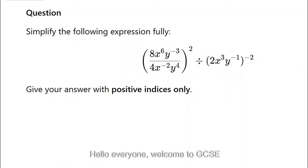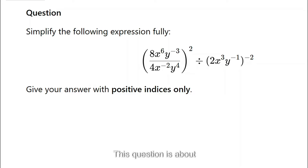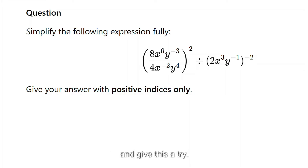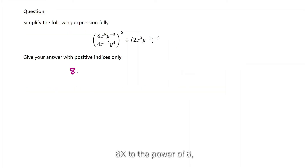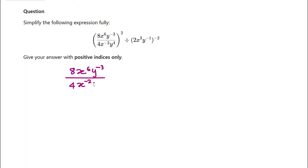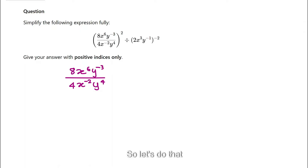Hello everyone, welcome to GCSE Maths Exam Sprint Series. This question is about indices — it's a slightly long question, not difficult exactly, but slightly long, so please pause the video and give this a try. The expression is: 8x to the power of 6, y to the power of negative 3, over 4x to the power of negative 2, y to the power of 4, all squared.